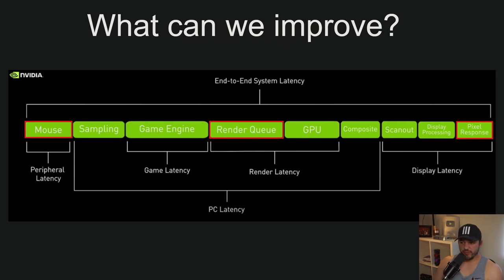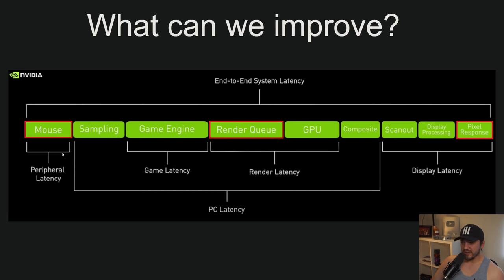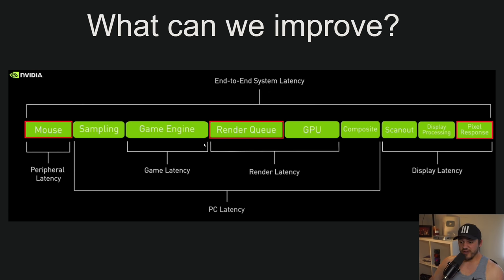With all of that in mind, what can we actually improve? Which of these things can we have an effect on when playing with settings, peripherals, or monitors? Your mouse or controller — you can buy a different one or overclock it, and that has an effect on end-to-end latency. As far as PC latency, FPS obviously has a big effect. Another thing we can affect is the render queue — that's highlighted in red and is the big focus of this video.